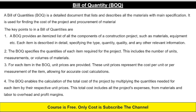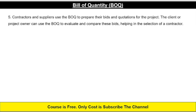The BOQ enables calculation of the total cost of the project by multiplying the quantities needed for each item by their respective unit prices. This total cost includes all project expenses, from materials and labor to overhead and profit margins. The client or project owner can use the BOQ to evaluate and compare bids, helping in the selection of a contractor.